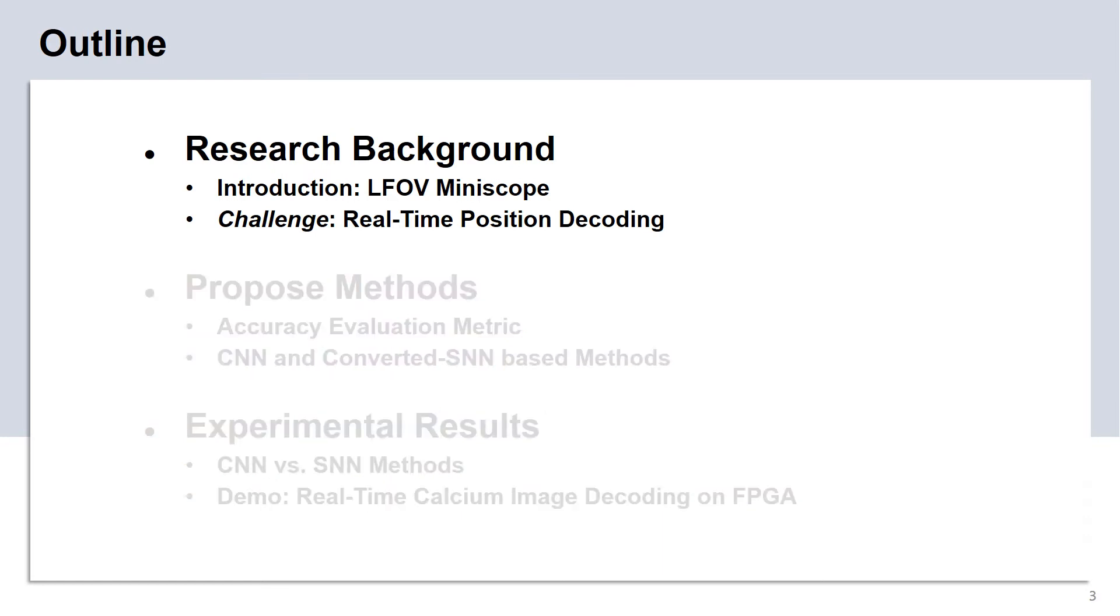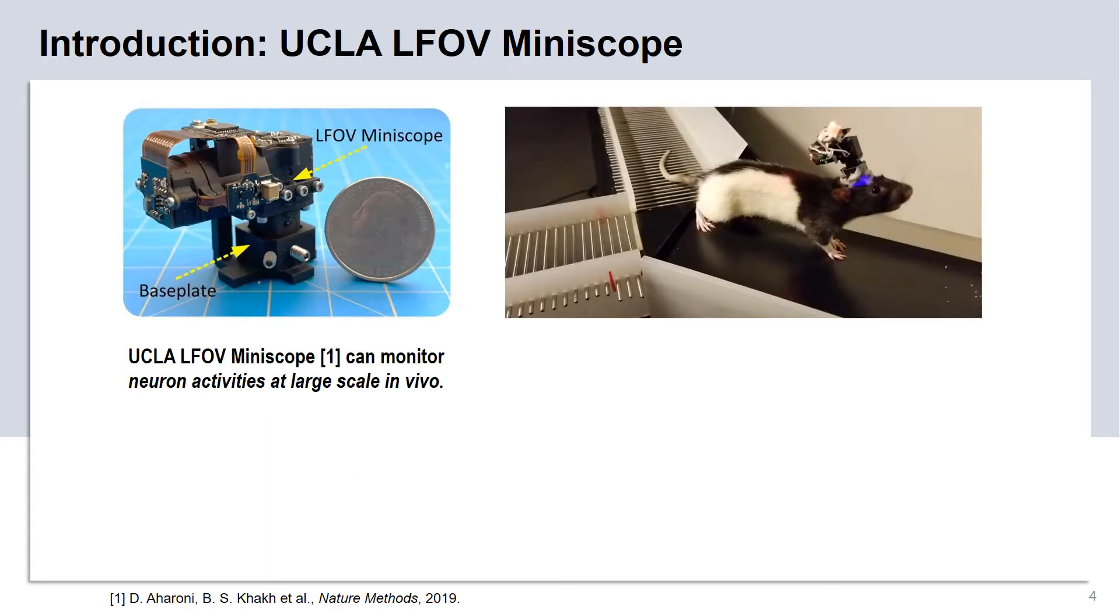First, let me introduce the research background. As shown in this photo, the UCLA miniscope is a miniaturized one-photon calcium imaging device that can be mounted at the head of a living animal, rat or mouse, to monitor the firing activity of a large population of neurons while the animal is freely behaving in the lab environment.